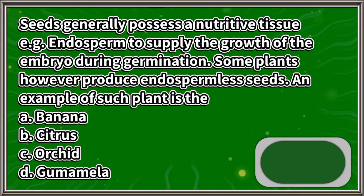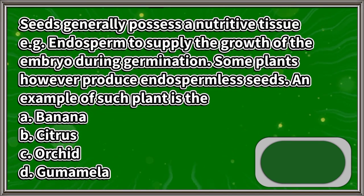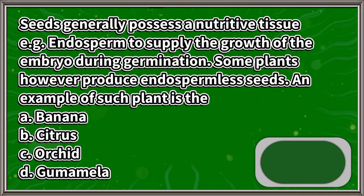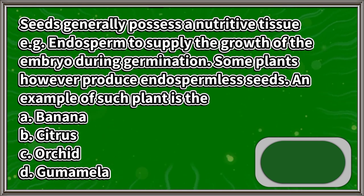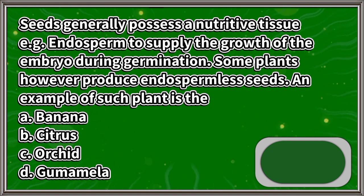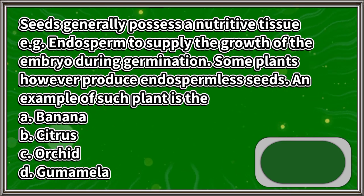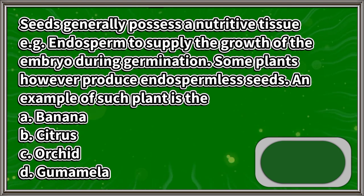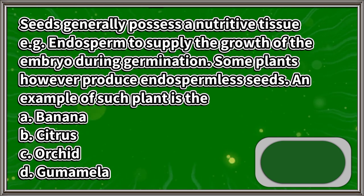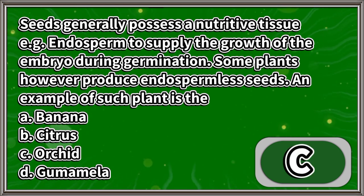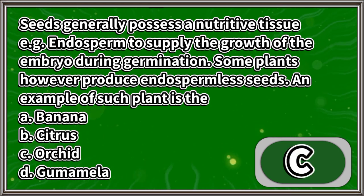Seeds generally possess a nutritive tissue, for example endosperm, to supply the growth of the embryo during germination. Some plants, however, produce endospermless seeds. An example of such a plant is the: A. Banana, B. Citrus, C. Orchid, D. Gumamela. The answer is letter C.